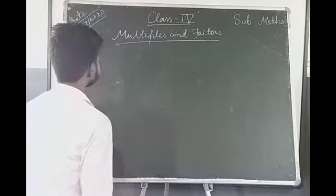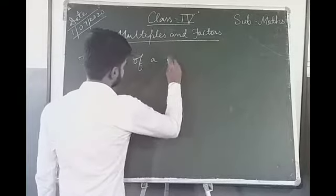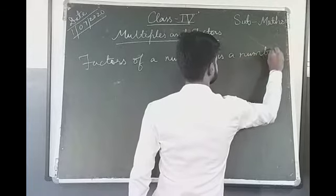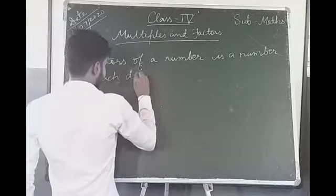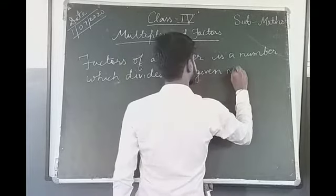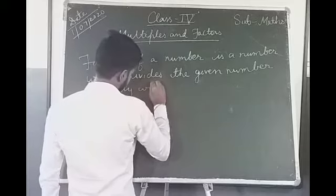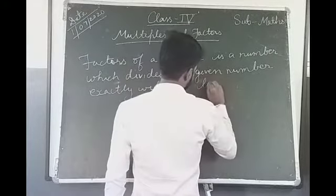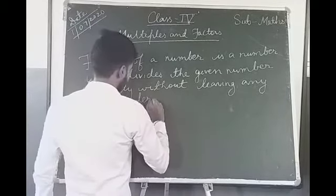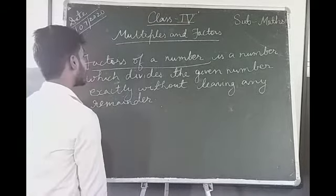What do you mean by factors of a number? Factors of a number is a number which divides the given number exactly without leaving any remainder. So, factors of a number is the number which divides the given number exactly without leaving any remainder.